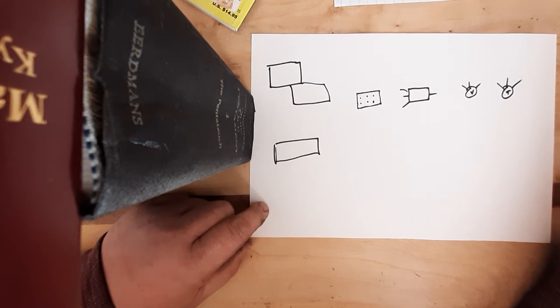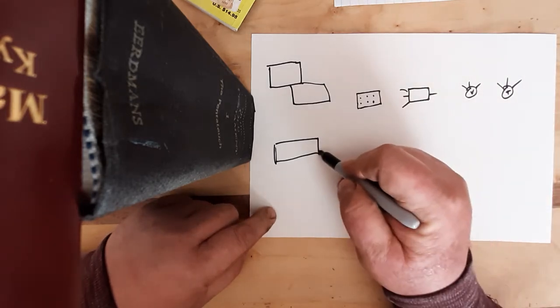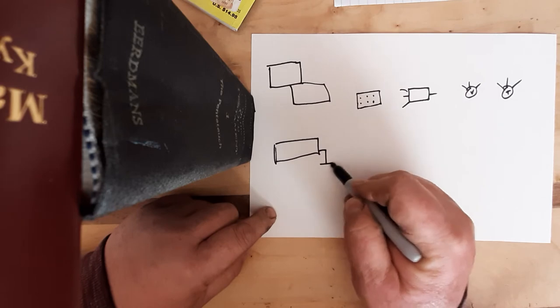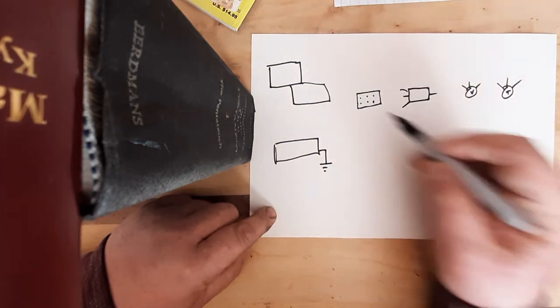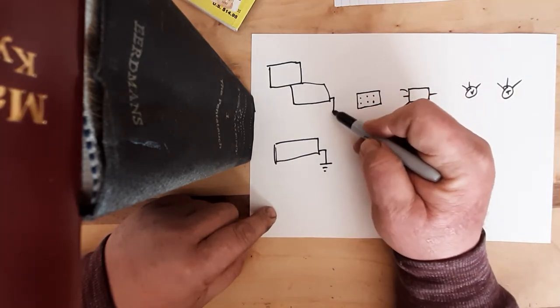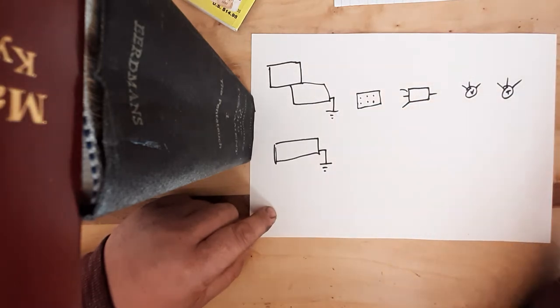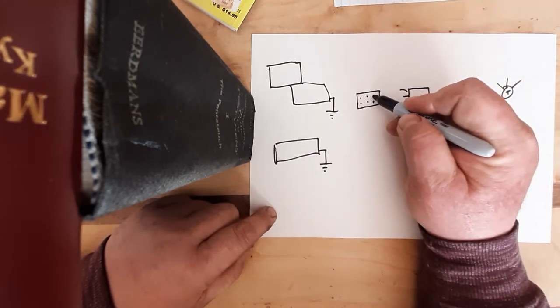So the first thing we do is we take care of our grounds on our pickups. So that one of the jazz bass pickup goes to ground, and here this one of the P bass pickup goes to ground.